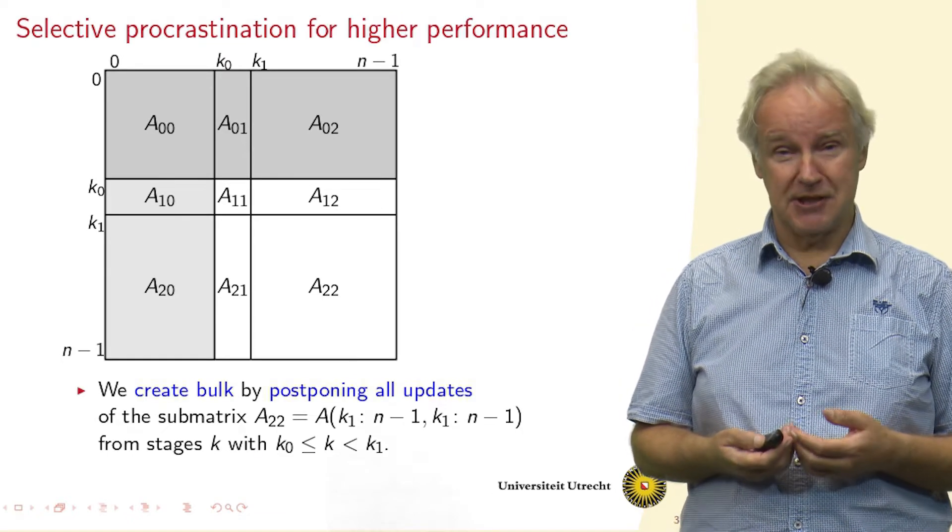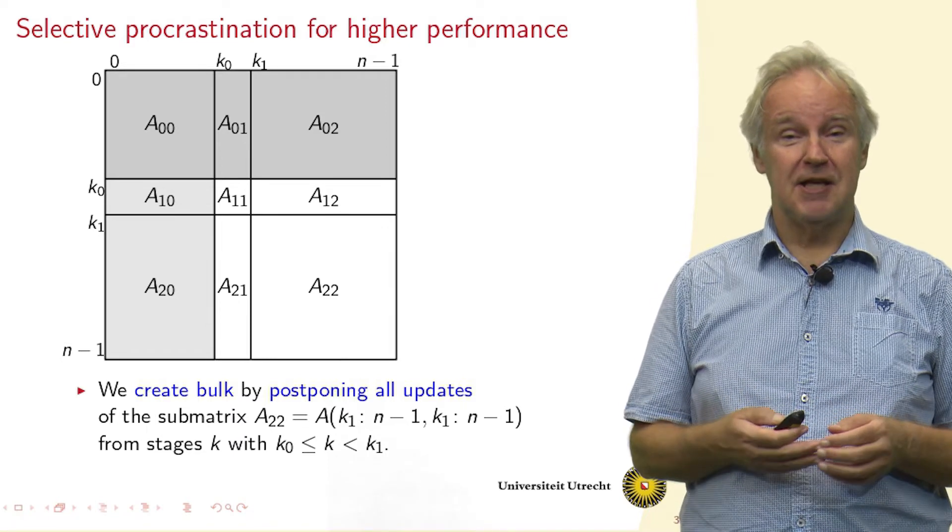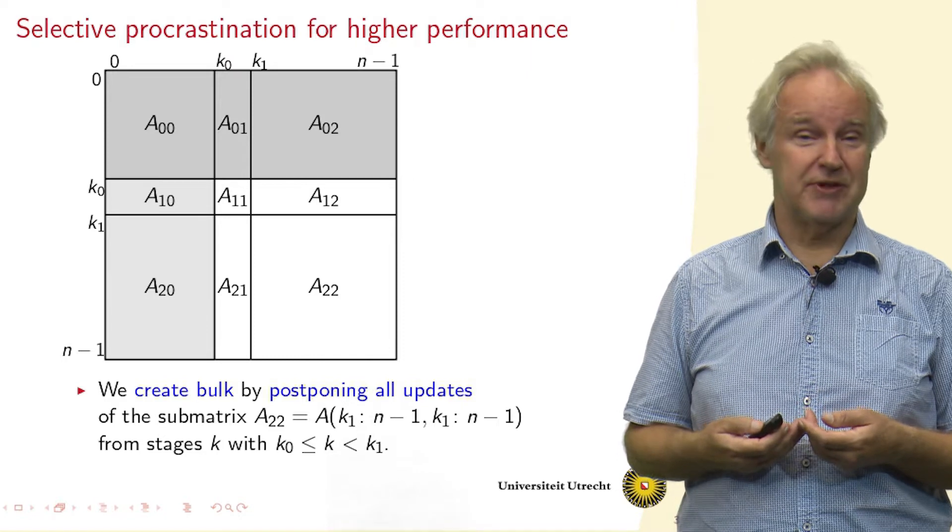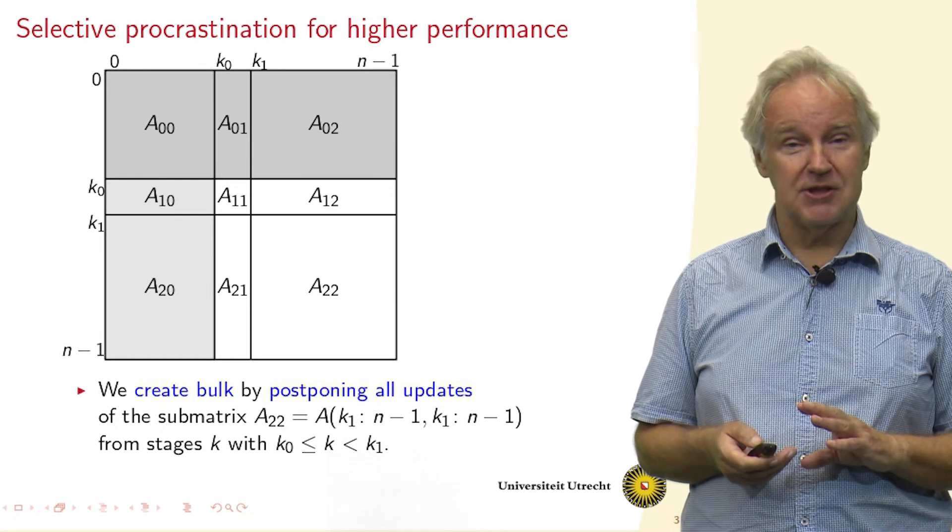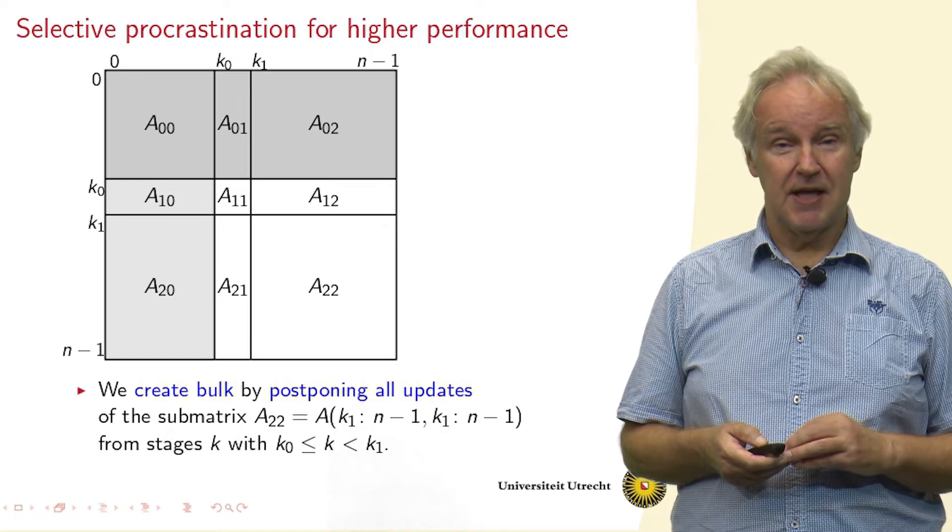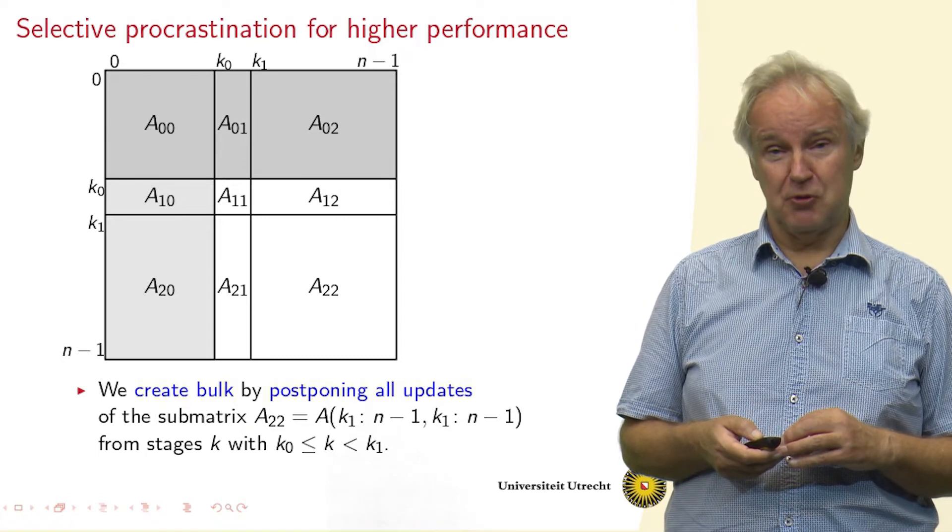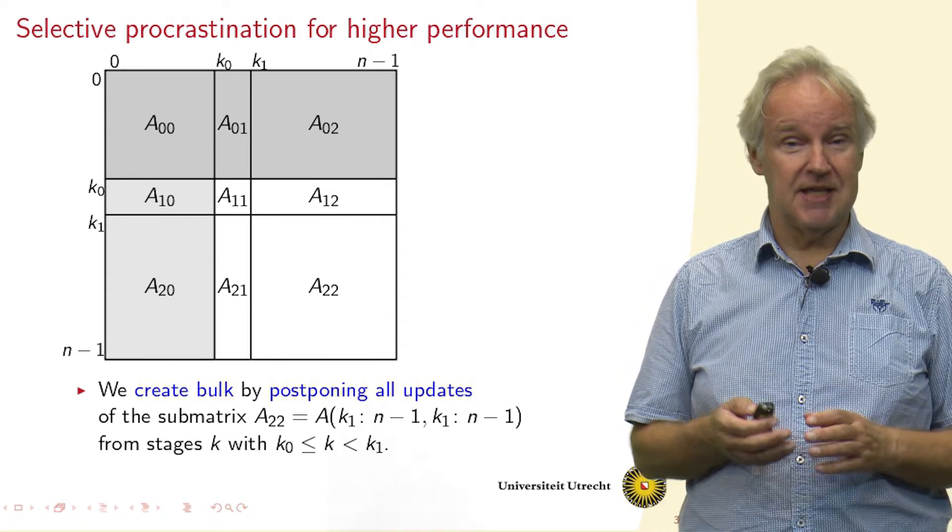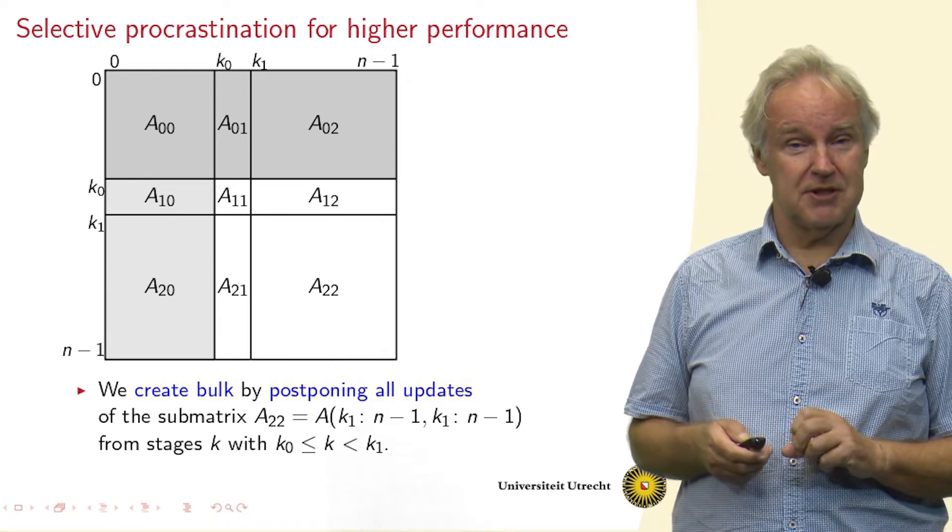So how do we get extremely high performance? A good idea is sometimes to delay computations to perform them in batch and then you can perform them more efficiently. And that is what we do here. We create bulk by postponing all the updates of the lower right hand corner of the matrix. Everything beyond columns and rows K1 is postponed. We start a little bit later and only those computations we delay.